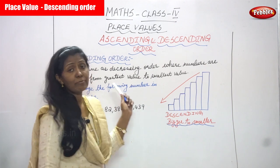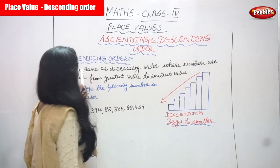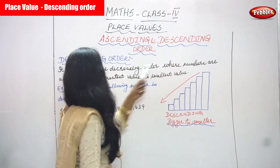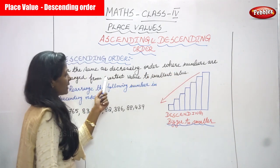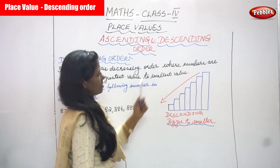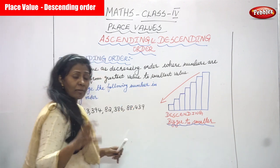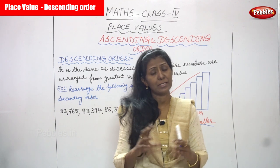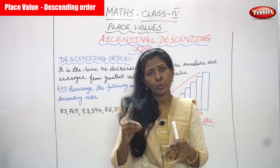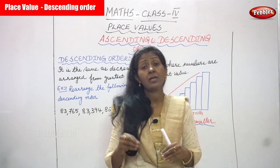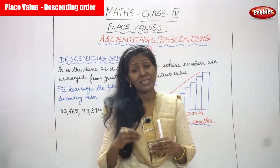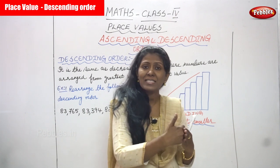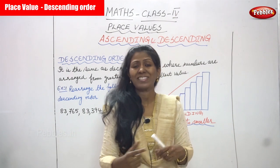Now we are going to see the definition of descending order. It is the same as decreasing order, where numbers are arranged from the greatest value to the smallest value. The numbers are in a group, all jumbled together, so we have to arrange them properly in descending order — from the biggest number to the smallest number.